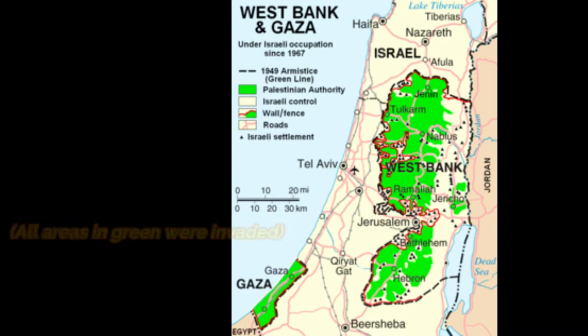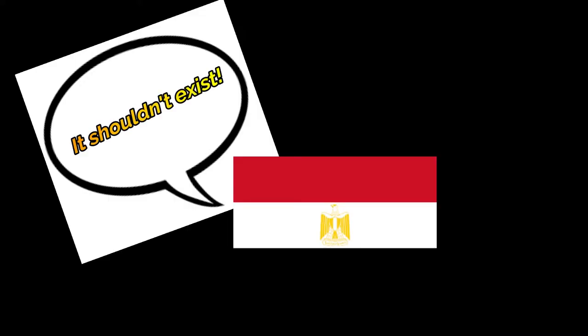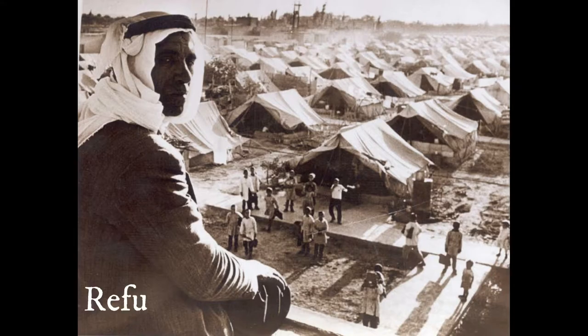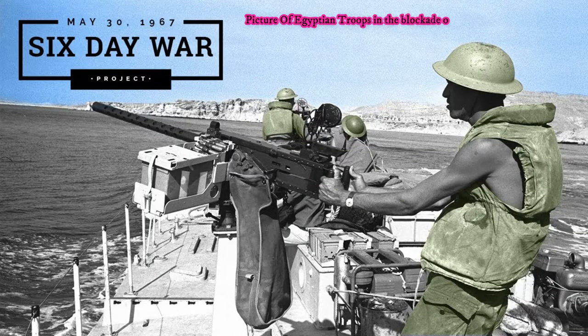Previous conflicts that led up to this war include the invasion of the Gaza Strip and West Bank of the Jordan River. Also, there were conflicts over Israel's own right to exist, its increasing military power, and the status of non-Jewish residents and refugees. The last straw, though, was the blockade of all ships bound for Israel through the Straits of Tiran.